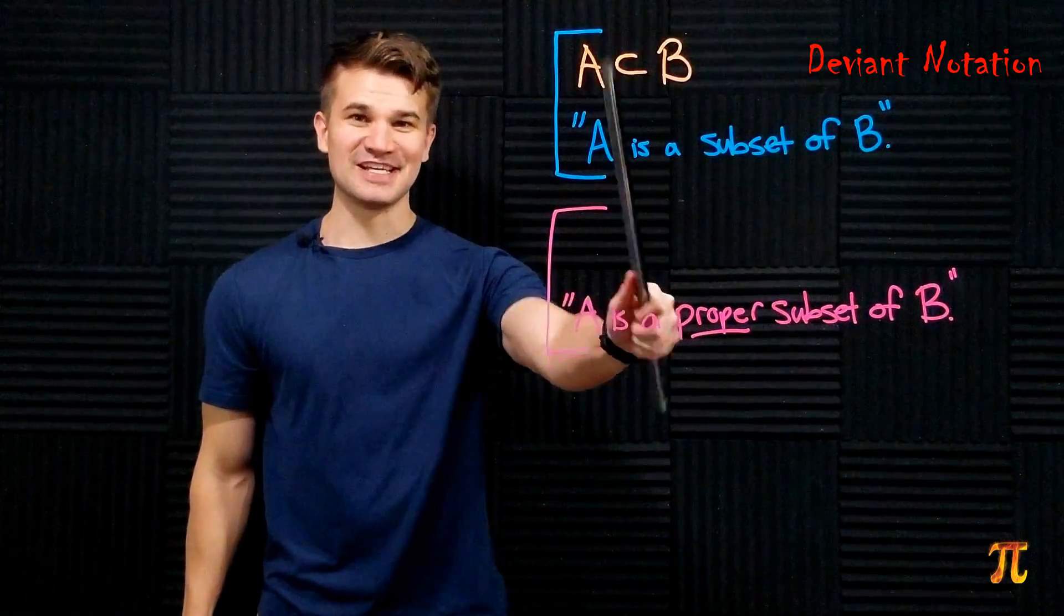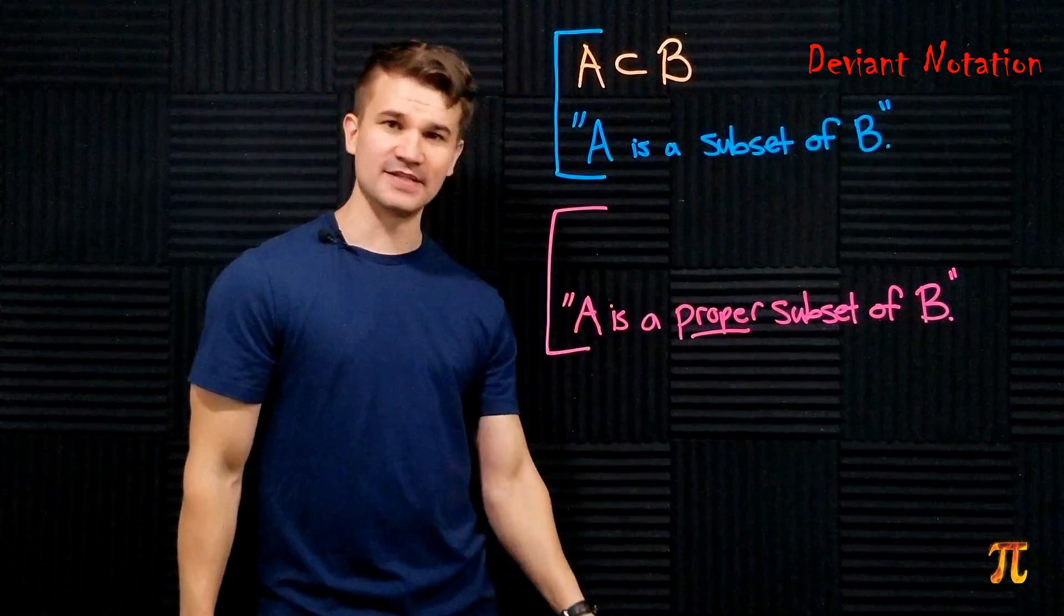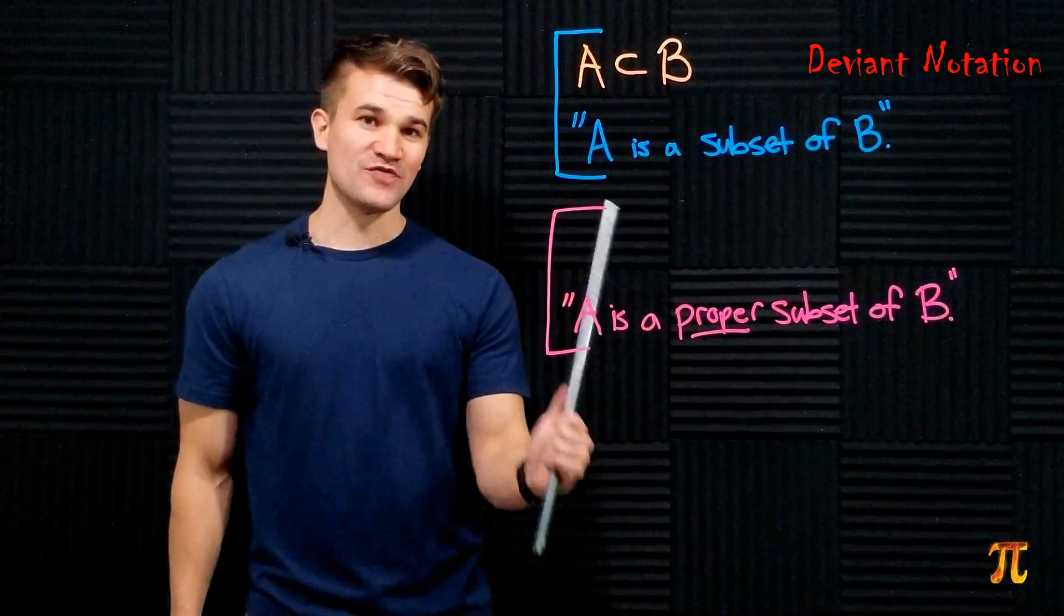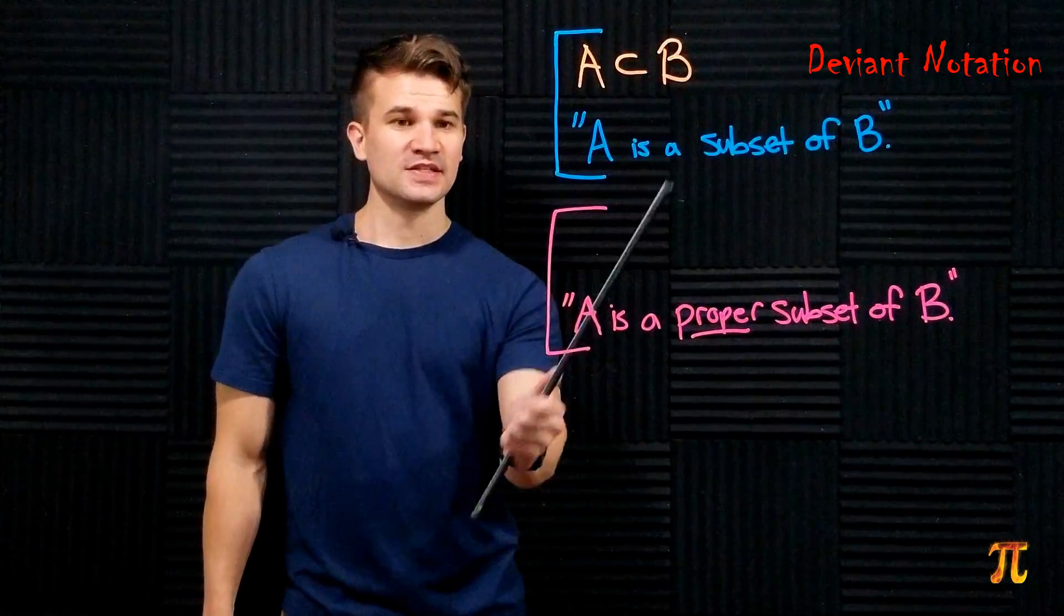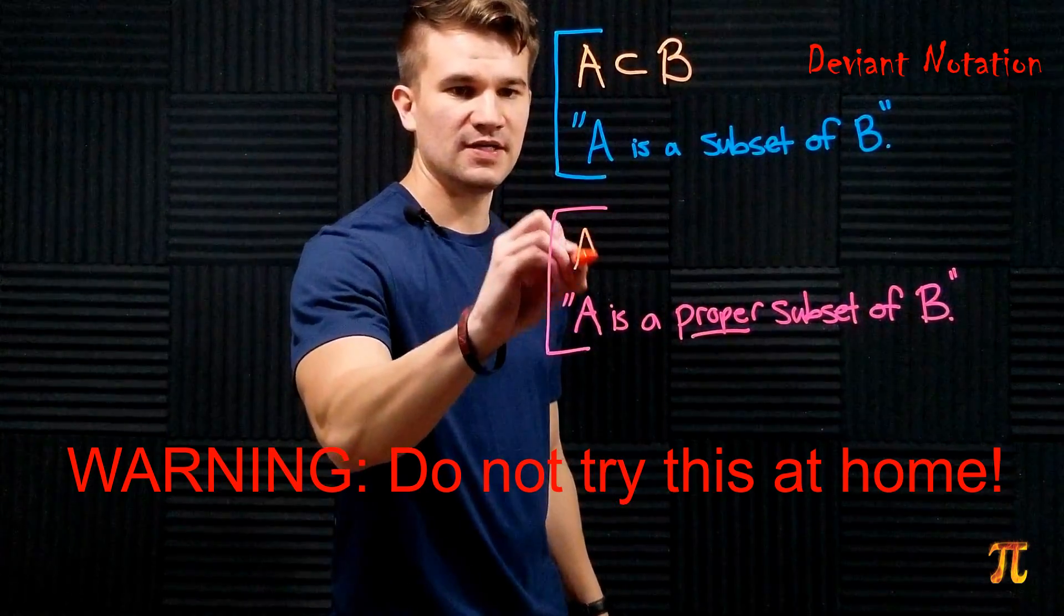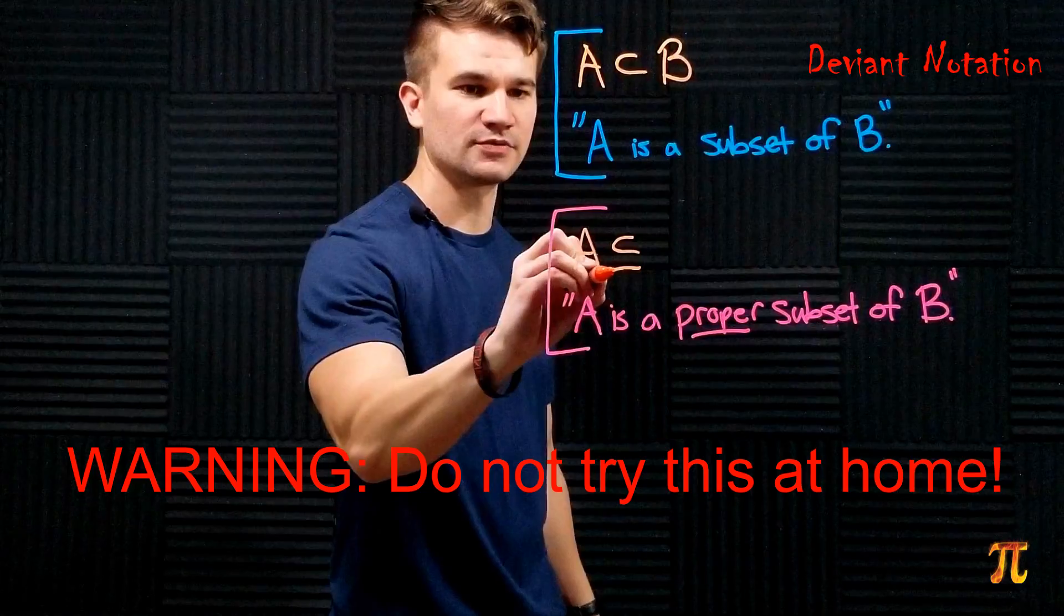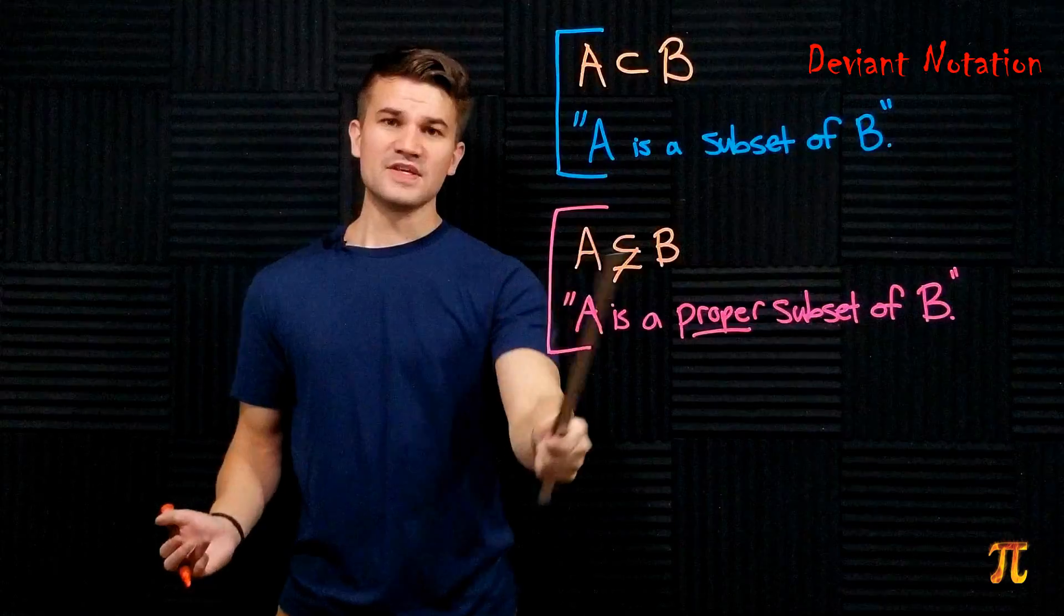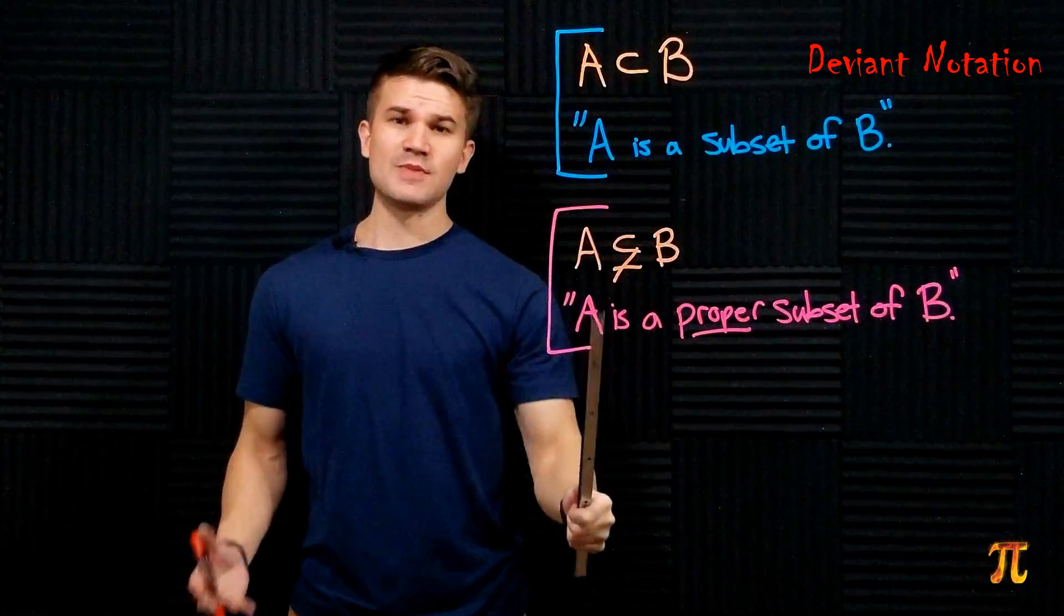Okay, so given that the old symbol for proper subset is now the symbol for subset, we have a new symbol for proper subset. So if A is a proper subset of B, this is what we write in the deviant notation: A proper subset or equal to but not really B. Now this looks absolutely ridiculous of course.